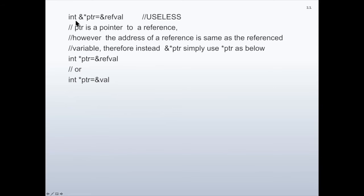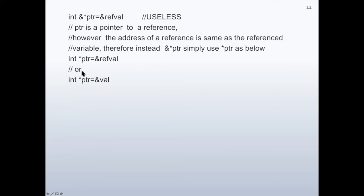If we write ptr as a pointer to a reference to an integer and try to load the address of ref_pi, this is useless. The address of a reference is the same as the referenced variable. Therefore, instead of a pointer to a reference, we can simply use a plain pointer. There is no need for the reference — integer pointer ptr initialized with the address of ref_pi is equivalent to initializing it with the address of 'w' directly.